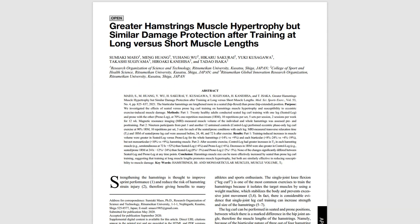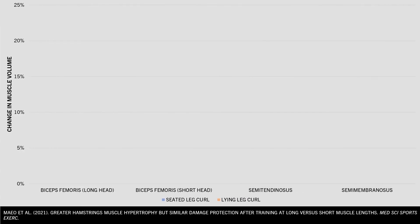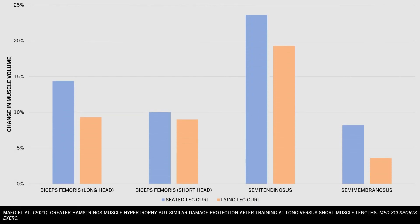First, this study explored the effects of performing seated versus lying hamstring curls. The seated curls naturally place the hamstrings at a longer muscle length, while the lying leg curls place the hamstrings in a shorter position. As we can see, the seated leg curl resulted in superior hamstrings hypertrophy compared with the lying leg curl for all hamstrings muscles, apart from the short head of the biceps femoris. These results make sense because the biceps femoris short head is the only portion of the hamstrings which only acts on the knee joint, so the hip position didn't influence this part of the hamstrings, meaning the stimulus was basically the same with both exercises.